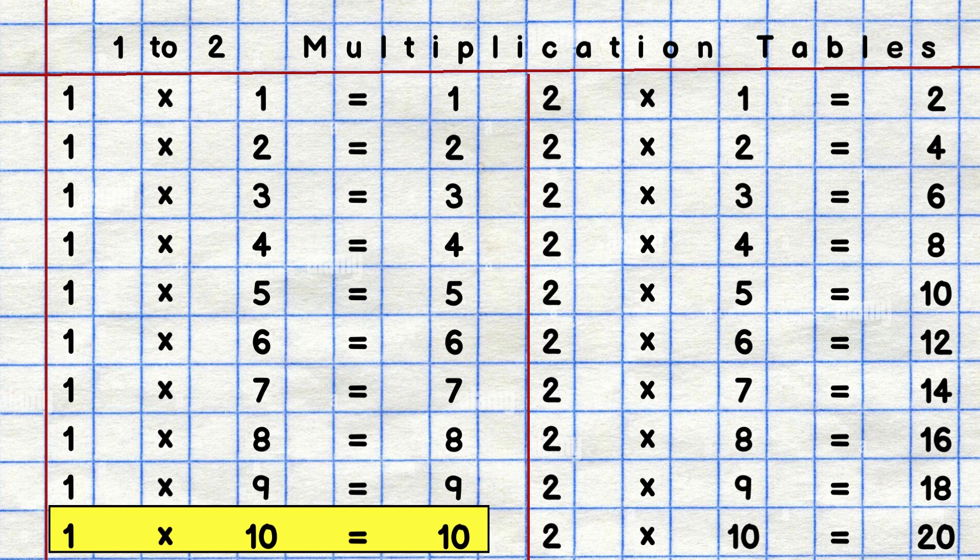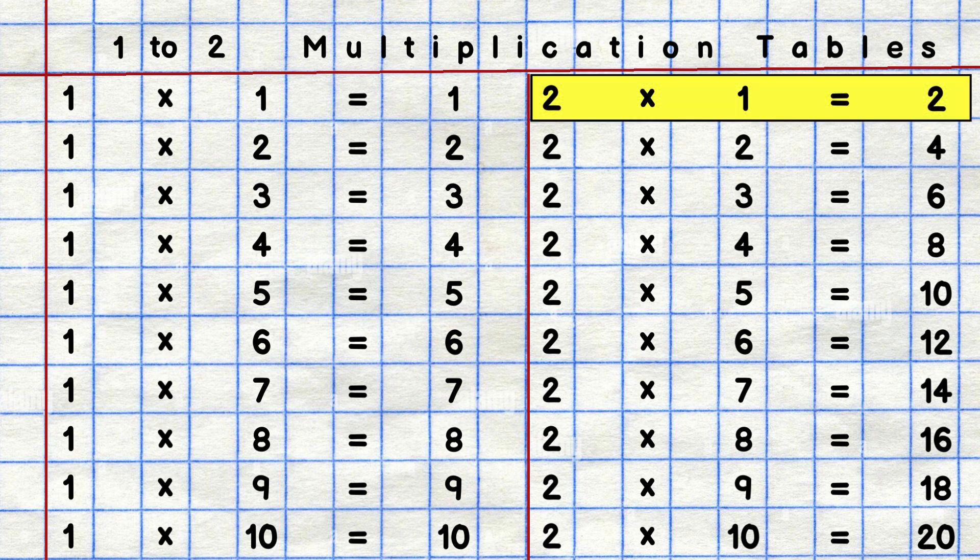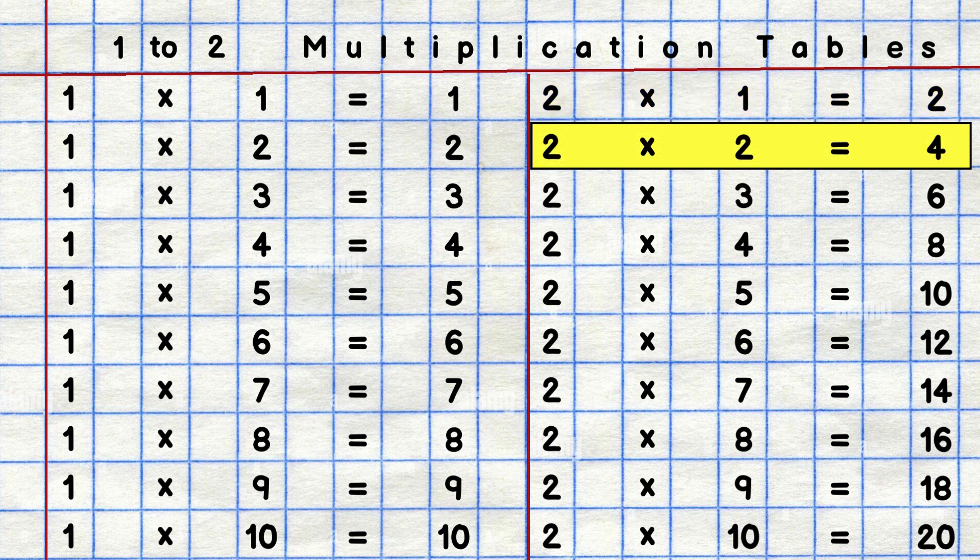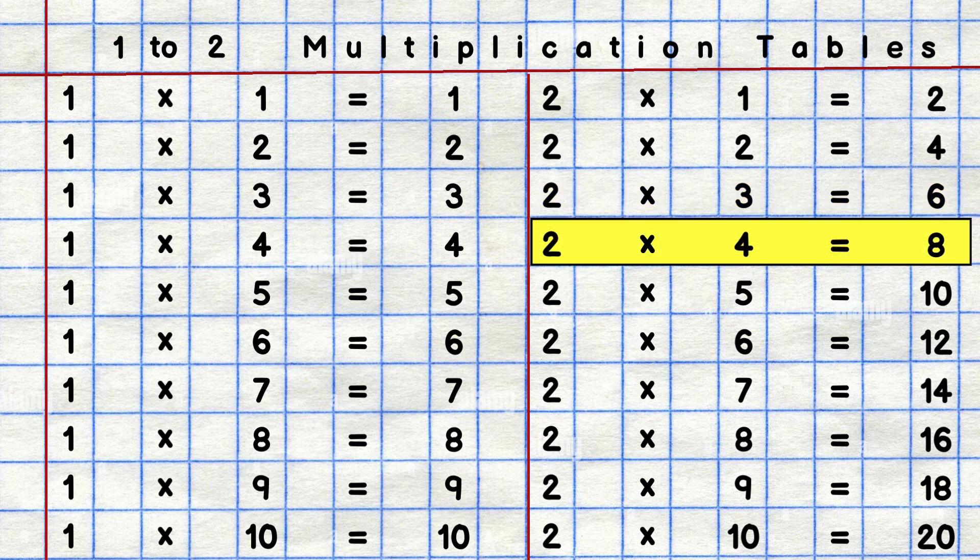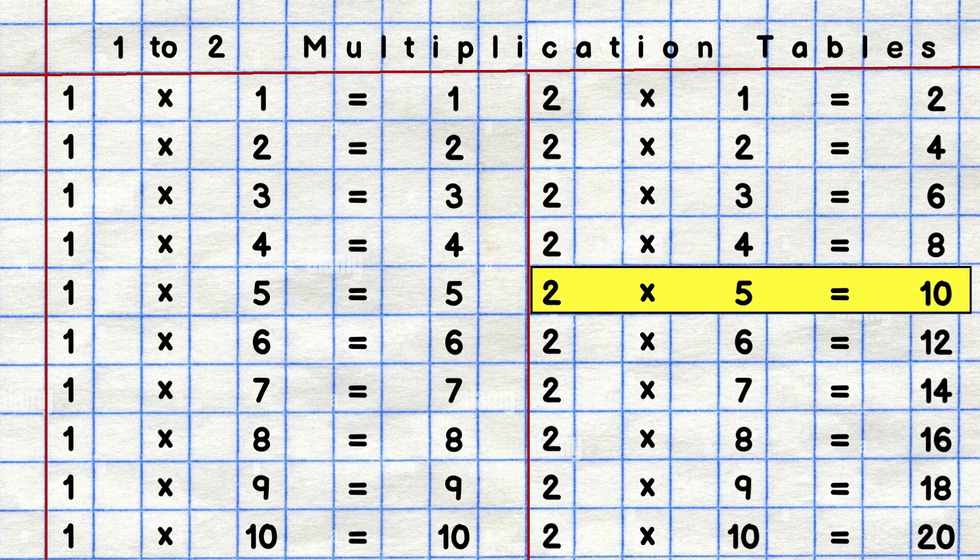two ones are two, two twos are four, two threes are six, two fours are eight, two fives are ten.